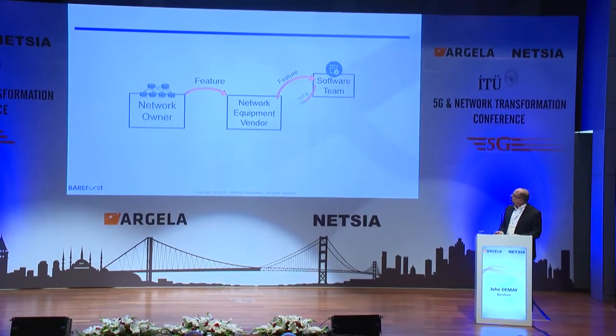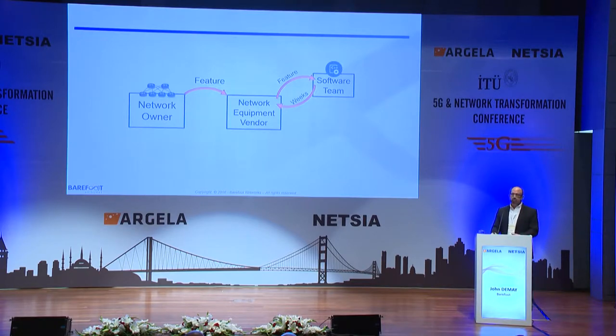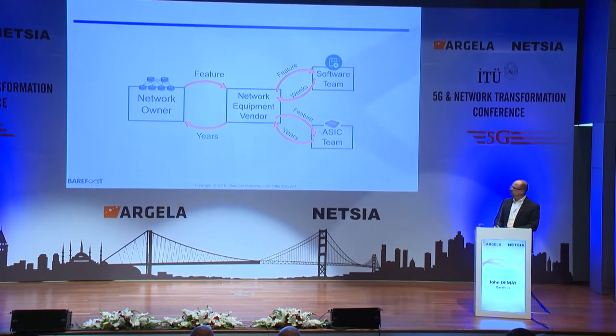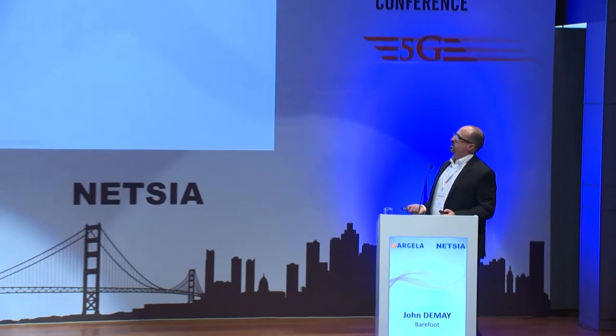That silicon could take two years to get to market. The process looks like this: a network owner tells the network equipment vendor they need a new feature or protocol. That vendor's software team will spend weeks determining feasibility, an RFC will be written, and then the vendor or merchant market silicon provider will decide whether to spend millions developing that ASIC — which then takes years to develop and reach production. When you need a new feature, you can't just upgrade the software. New forwarding functionality takes years. And when you finally upgrade your silicon, either it no longer solves your problem because you found a workaround, or you need to build a new product.